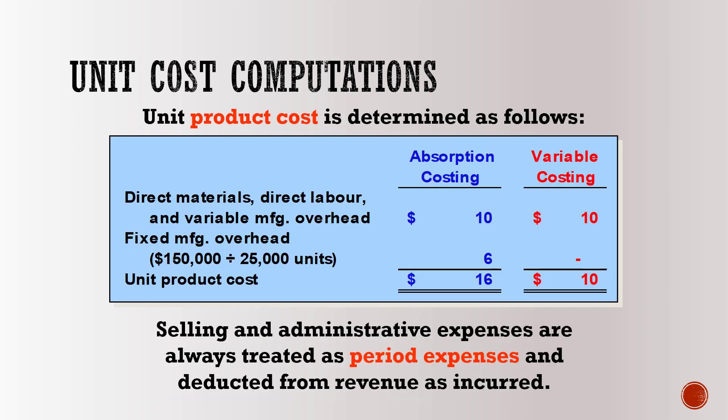The unit product cost is determined as follows: under absorption costing, unit product cost is $16, and under variable costing, unit product cost is $10. One important thing to remember: selling and administrative expenses are always treated as period expenses and deducted from revenue as incurred.